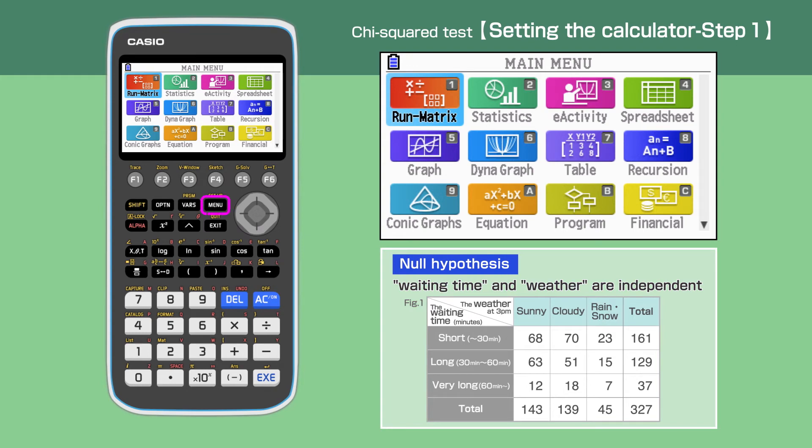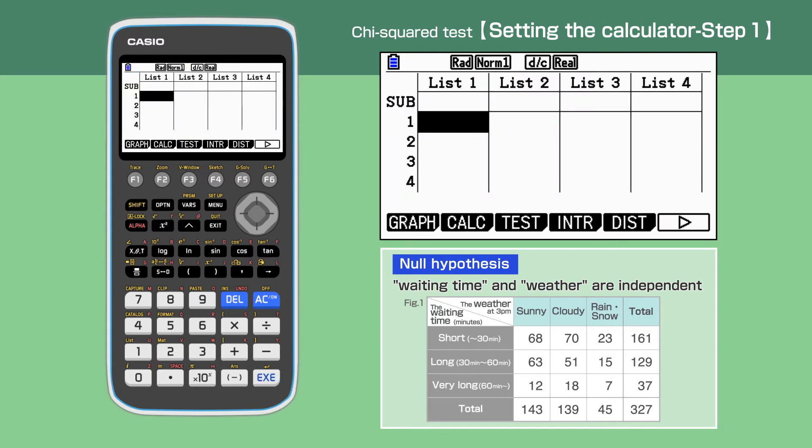Press the menu button to open the main menu, then move the cursor or press 2 to choose the statistics function. Press F3 test, then F3 again to select the chi-squared test. Press F2 to choose two-way.